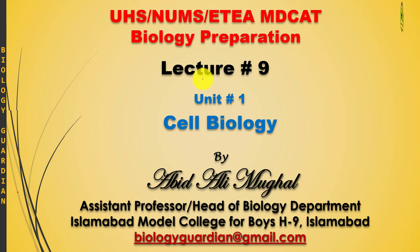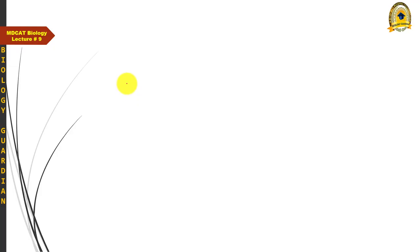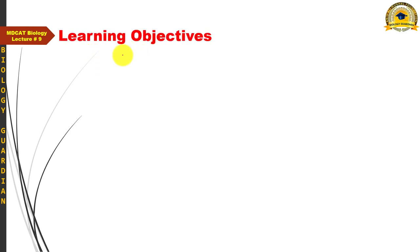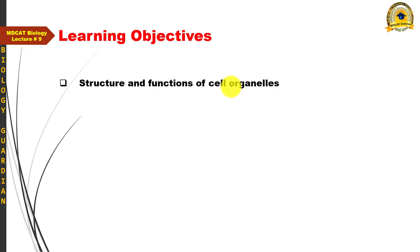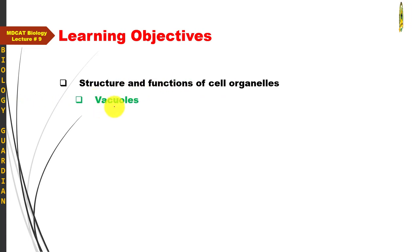Today we are going to start lecture number nine, in which we will cover some remaining topics of the unit Cell Biology. Today's learning objectives include the structure and functions of cell organelles. We have already discussed some cell organelles in our previous two lectures. Today we will cover the remaining topics including vacuoles, cytoskeleton and its different types of fibers, and centrioles.